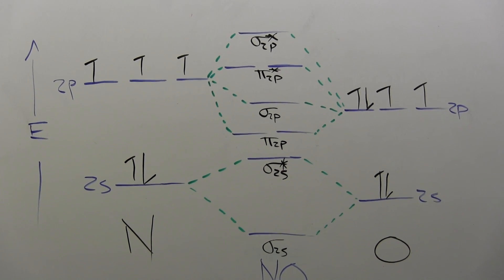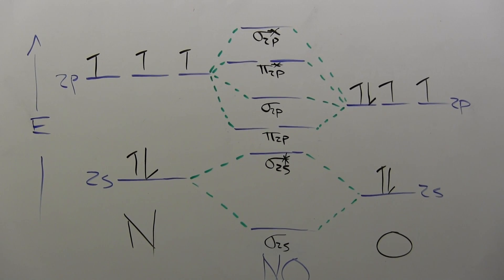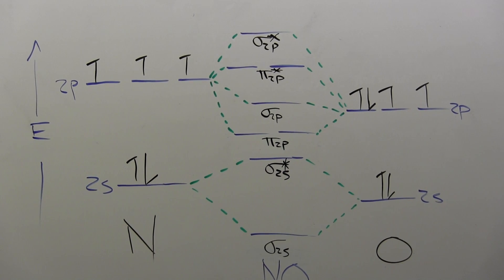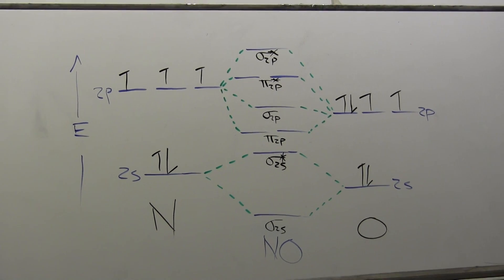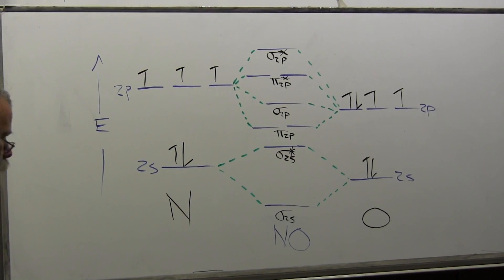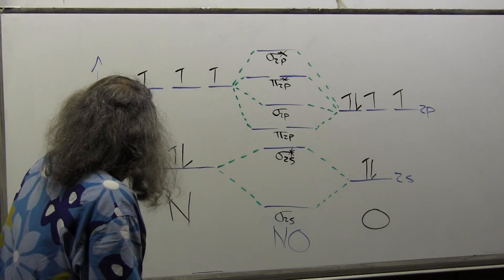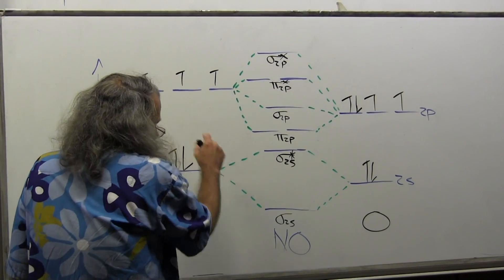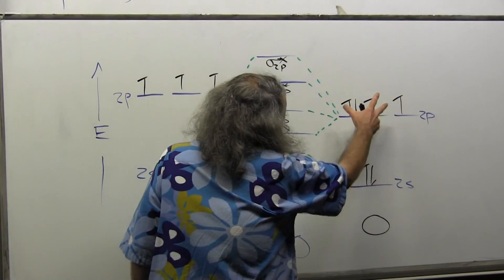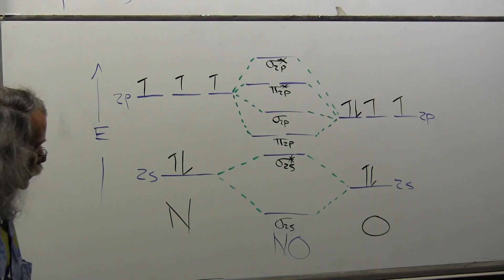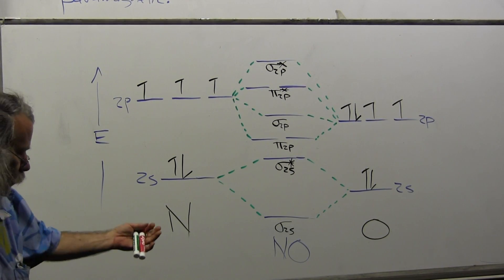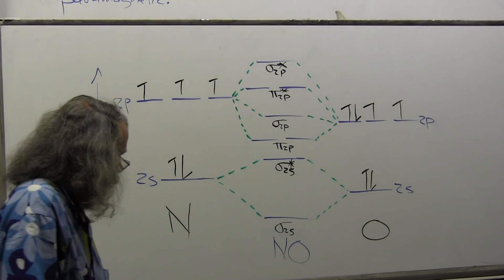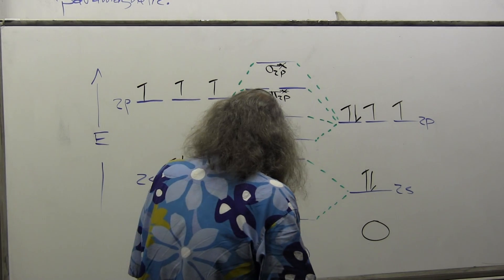I draw all the lines correlating those, and now I place the electrons in. We do this the same way we filled atomic orbitals — following Hund's rule, placing electrons in the lowest energy orbitals first. I have 5 electrons from nitrogen and 6 from oxygen, which is 11 electrons total to place in.